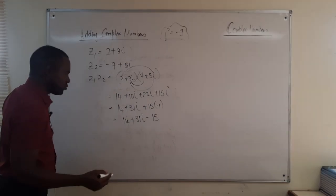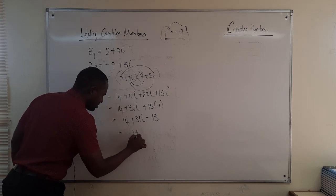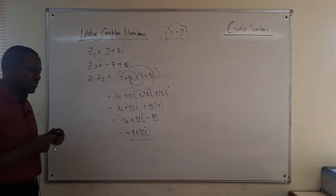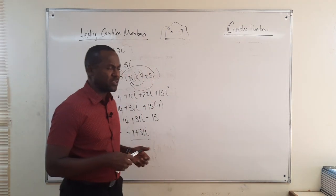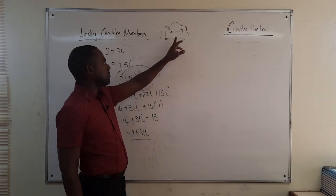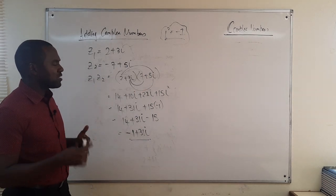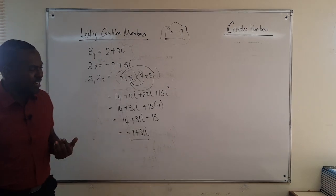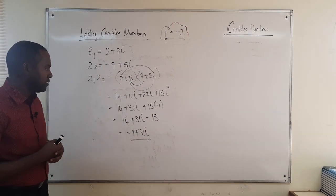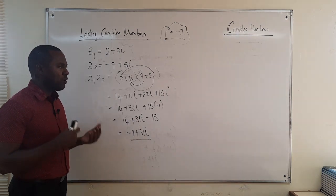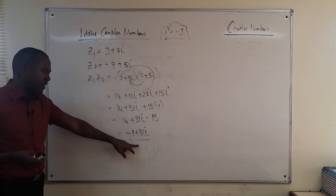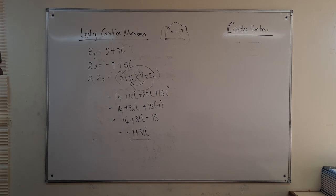Combining terms: 14, then 10i plus 21i gives 31i, then 15 times minus one gives minus 15. So we have 14 plus 31i minus 15, which equals minus 1 plus 31i. Whenever we multiply two complex numbers, the product of their imaginary parts produces a real term because i squared equals minus one. So z1 times z2 equals minus 1 plus 31i.